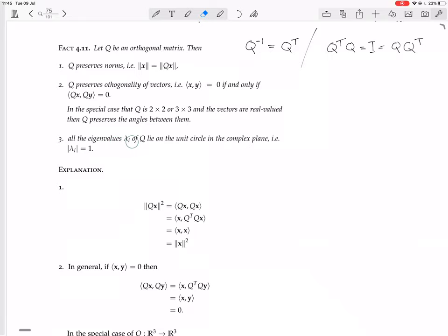And three, all the eigenvalues lambda of Q lie on the unit circle in the complex plane. In other words, Q being a square matrix, we know it has N eigenvalues, possibly repeated, possibly complex. But this now says that those eigenvalues all have a magnitude of 1.